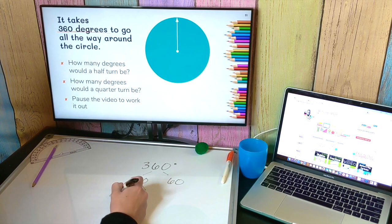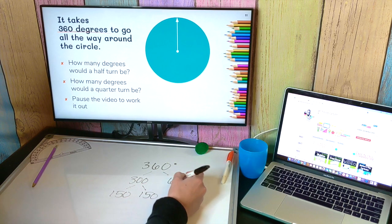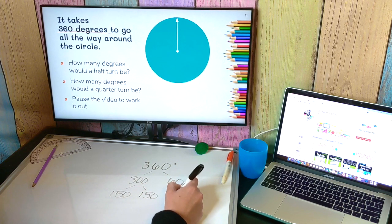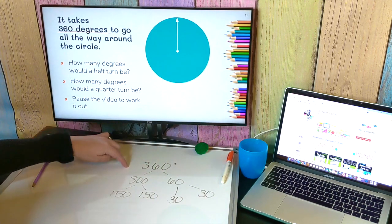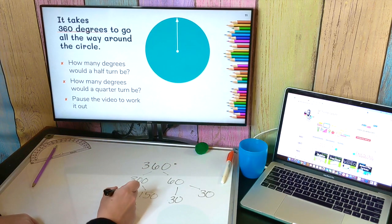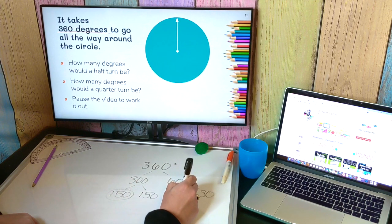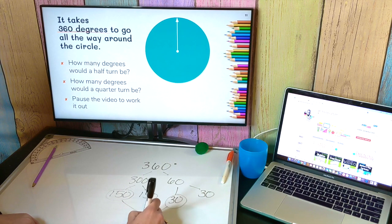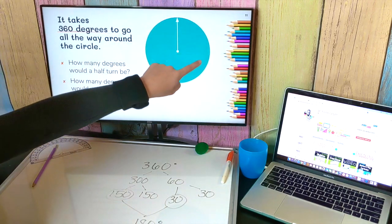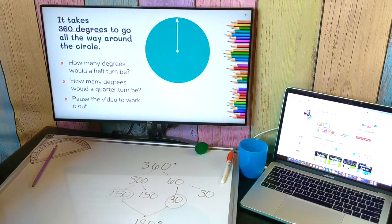And I know half of 60 is 30. So if I wanted to know half of the whole thing, I can take half of my 300 and half of my 60. If I combine those, I get 180 degrees. So I know my half turn would be 180 degrees.